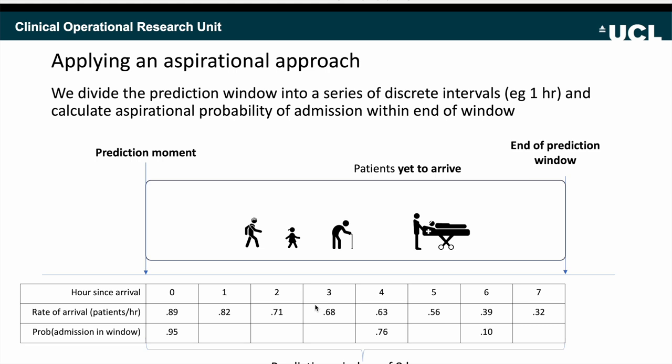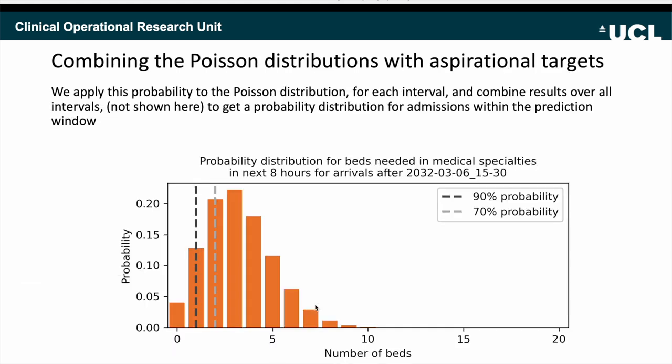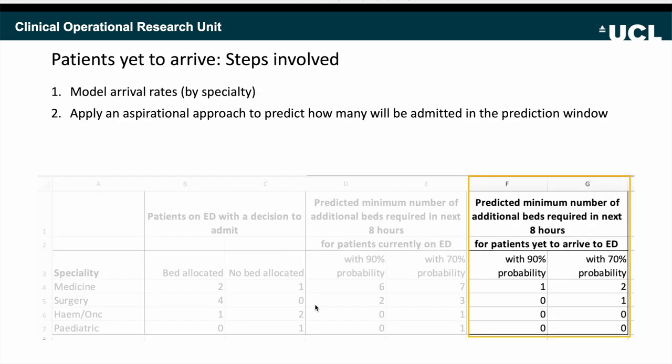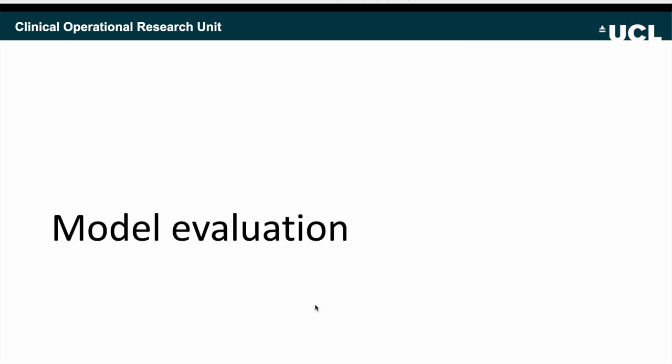Combining the arrival rate Poisson distribution with the aspirational probability, we generate a probability distribution as before. If a patient arrives shortly after the start of the window they have a high probability of being admitted by the end of the eight hours; if they arrive just before the end they have a low probability. Combining these, we can read off: for example, a 90% probability of needing at least one bed for yet-to-arrive patients and a 70% probability of needing two beds, giving us the numbers in the spreadsheet for the medical patients at that prediction moment.